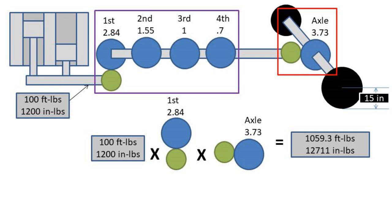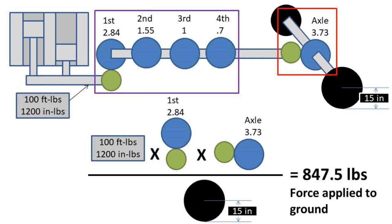This is assuming 100% driveline efficiency. Now to finish off the video, let's take the output torque and divide it by the wheel radius to get how much force is applied to the ground by the wheels. In this case, the wheels are applying a force of 847.5 pounds.